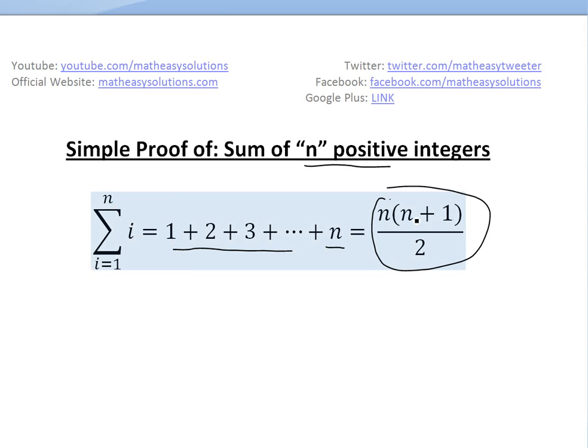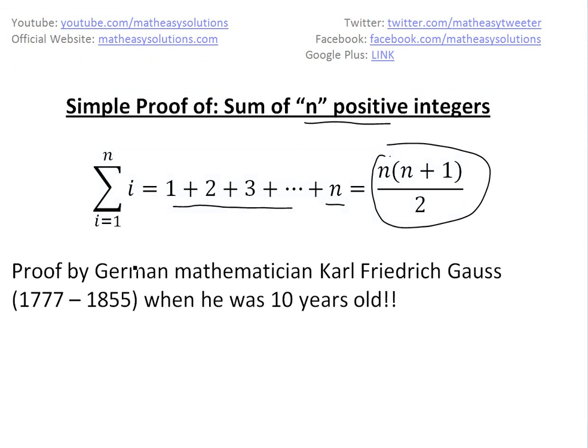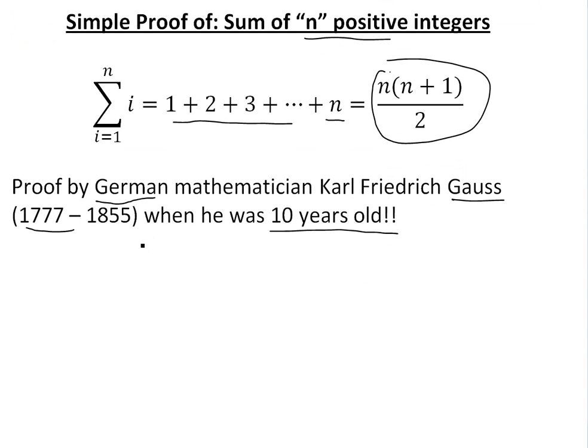n times n plus 1 divided by 2. The proof I'm going to show is done by German mathematician Carl Friedrich Gauss. You're probably going to hear him a lot in physics and whatnot, especially this last name. He was born in the 1700s to 1800s, up to 1900s, and he did this proof when he was 10 years old. He was a genius as a kid, a child prodigy.